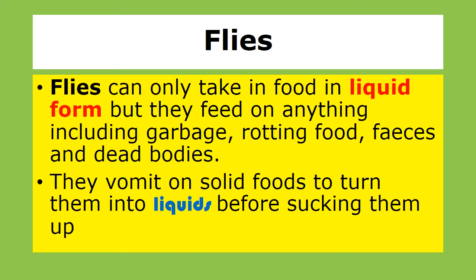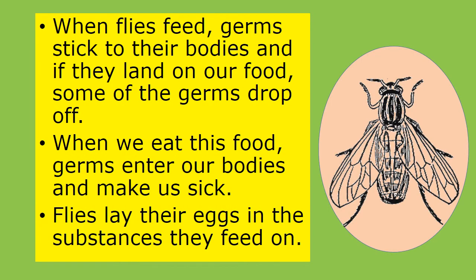Flies can only take in food in liquid form, but they feed on anything including garbage, rotten food, feces, and dead bodies. They vomit on solid food to turn it into liquid before sucking it up. When flies feed, germs stick to their bodies, and if they land on our food, some of the germs drop off. When we eat this food, germs enter our bodies and make us sick.